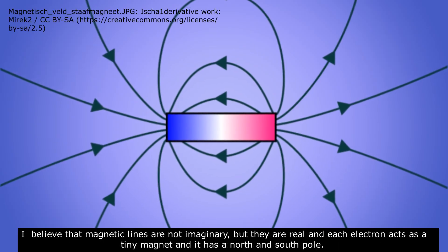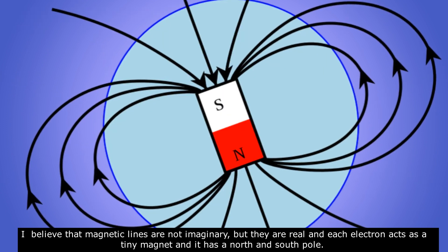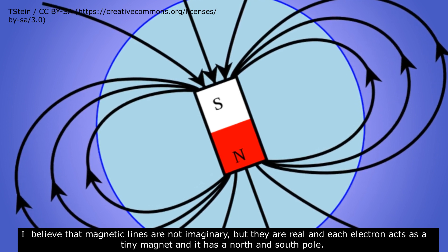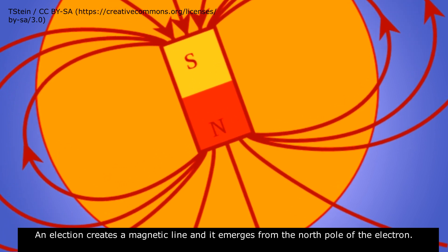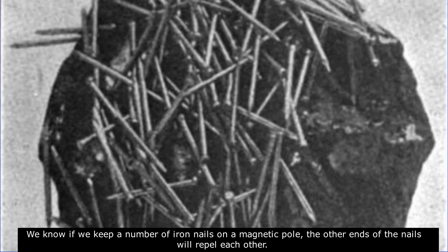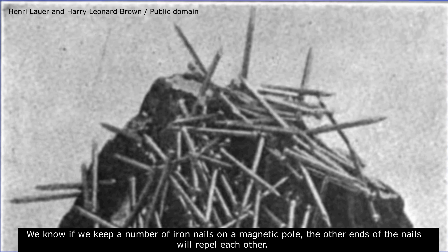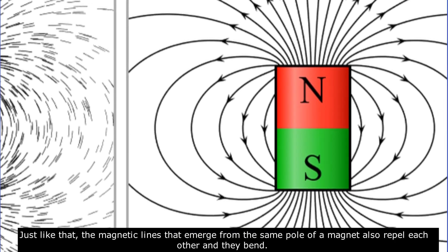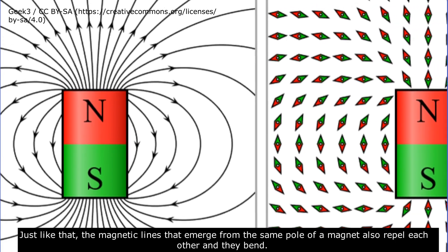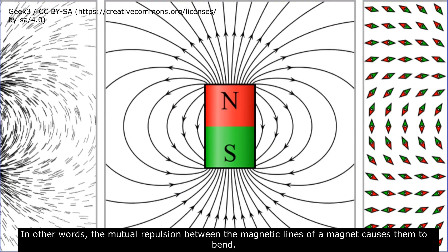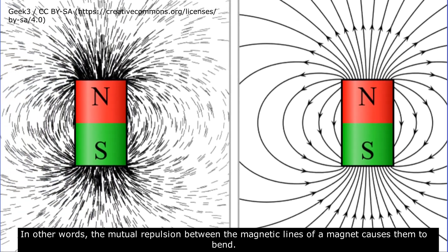I believe that magnetic lines are not imaginary but real, and each electron acts as a tiny magnet with a north pole and a south pole. An electron creates a magnetic line that emerges from its north pole. Just as iron nails placed on a magnetic pole repel each other at their other ends, the magnetic lines emerging from the same pole of a magnet also repel each other and bend. In other words, mutual repulsion between the magnetic lines causes them to bend.